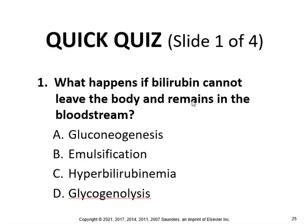Here's a quiz: what happens if bilirubin cannot leave the body and remains in the bloodstream? You get hyperbilirubinemia, also known as jaundice, which usually causes a yellow discoloration of the skin, whites of the eyes, and mucous membranes. Breaking it down: hyper means excessive, bilirubin, and emia — that's why you want to learn medical terminology so you can understand what hyperbilirubinemia means.